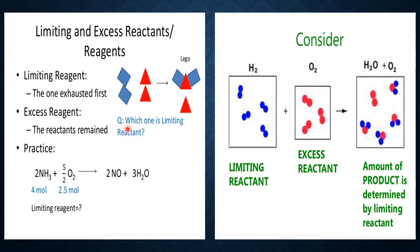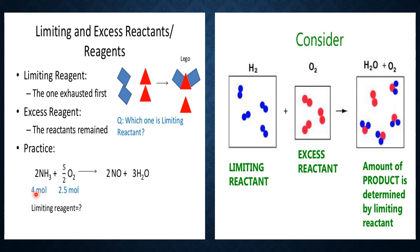Now an actual chemical example: two moles of ammonia react with 5/2 moles of oxygen to give two moles of nitric oxide and three moles of water. This is the balanced chemical equation we will study in 12th class under the preparation of nitric acid by oxidation of ammonia — the famous Ostwald process. In the laboratory, suppose I have taken four moles of ammonia and 2.5 moles of oxygen. Which one is the limiting reagent?